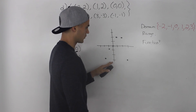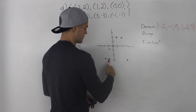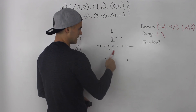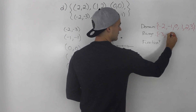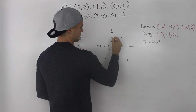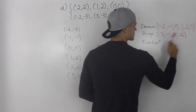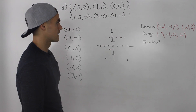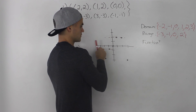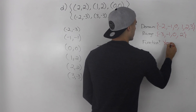For the range, starting at the bottom y values and moving up: the first y values are two negative 3s, so we write negative 3 once; next is negative 1; then a y value of 0; and finally a y value of 2 for two points. That is our range. Running the vertical line test through it, there is no point where the relation touches the vertical line twice, so it passes the vertical line test — it is a function.